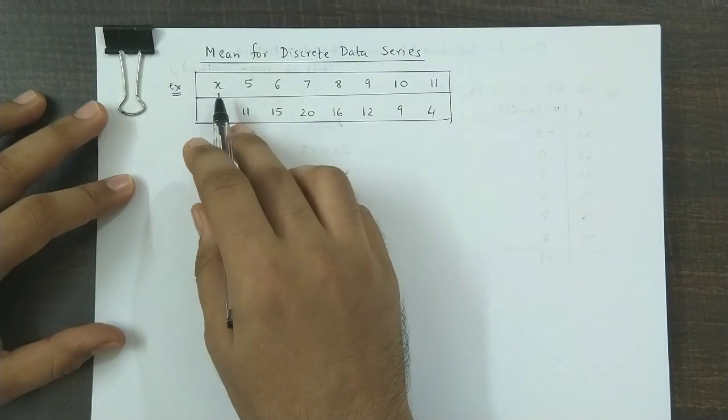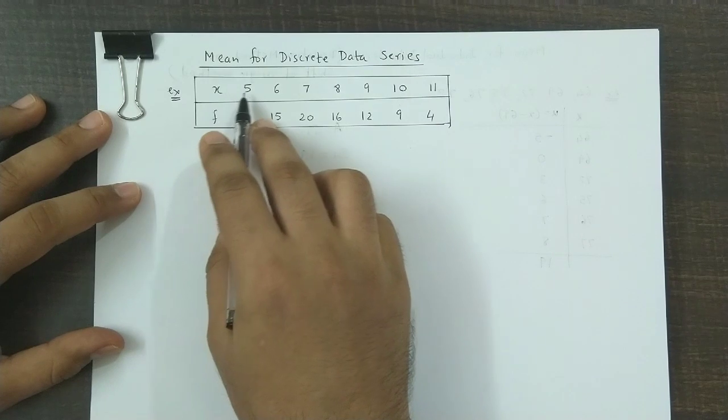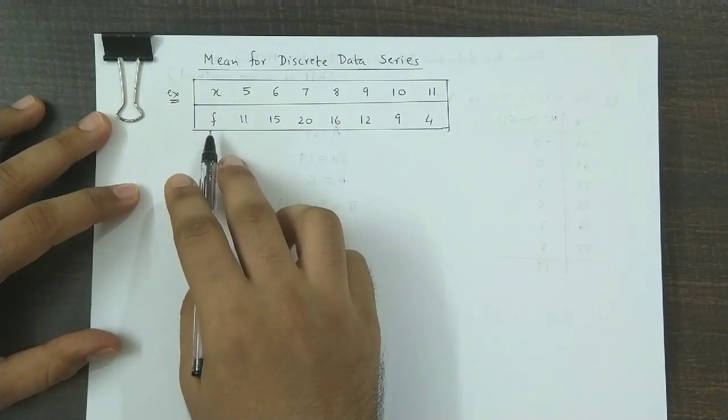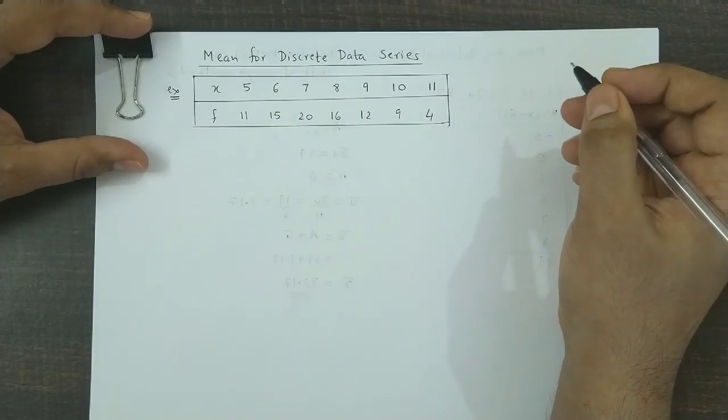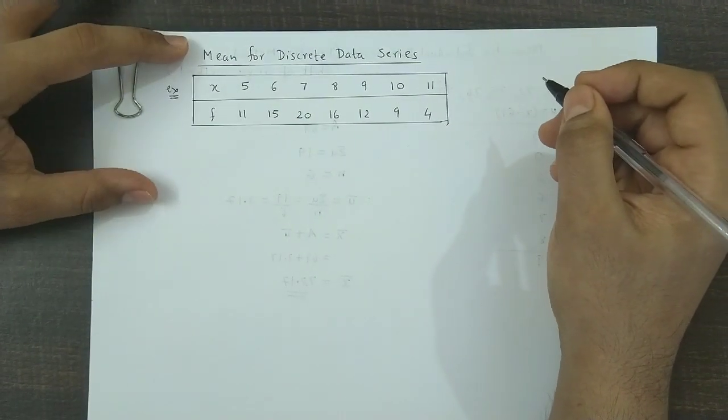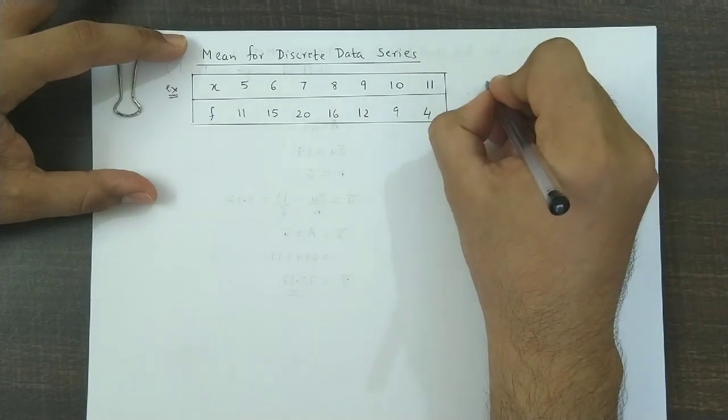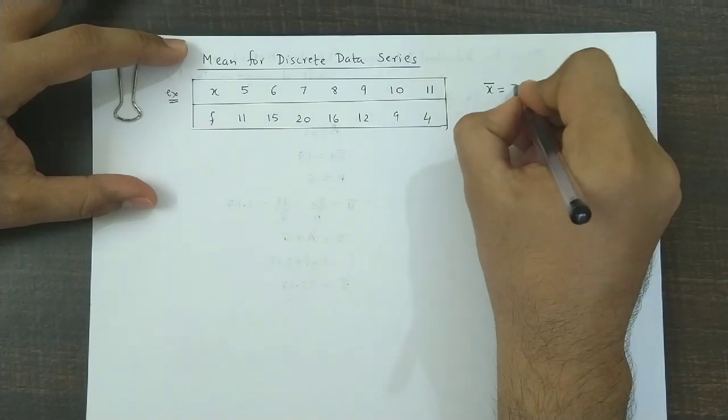We have the values for the variable x: 5, 6, 7, 8, 9, 10, 11, and we have the corresponding frequencies. The formula used for finding the mean for discrete data series is x̄ = Σfx / Σf, that is summation of f into x divided by summation f, the total frequency.